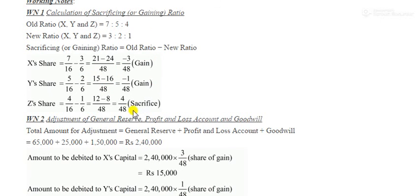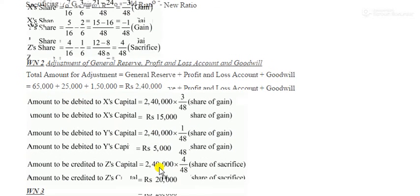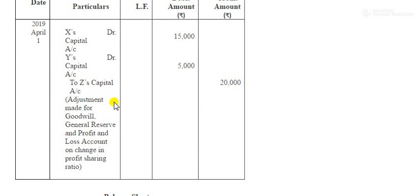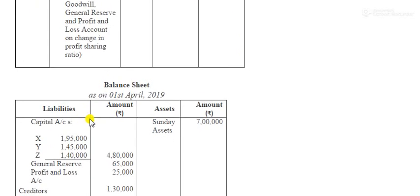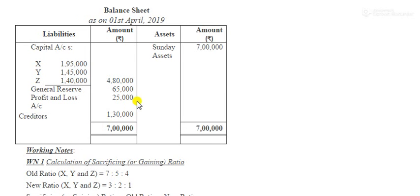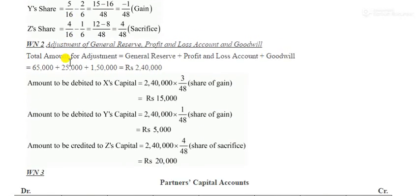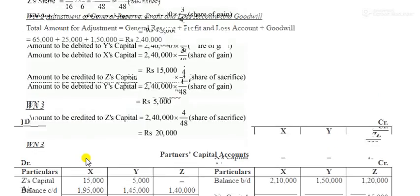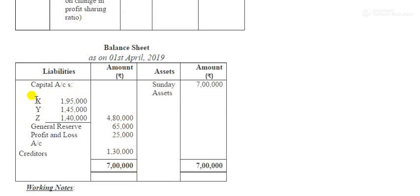Since everywhere it is gaining to sacrifice, we need to calculate gain and sacrifice using the old minus new formula. We add all values and calculate the gain and sacrifice amounts. According to these amounts we pass the journal entry: X and Y are gainers, Z is the sacrificer. For the balance sheet, the capital is what we need to calculate — we make the partners capital account, post the entry using ledger rules, get the closing balances, and put them in the balance sheet.